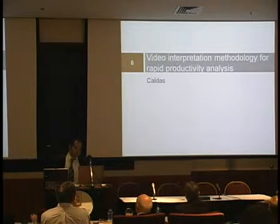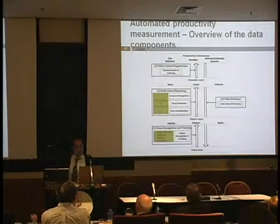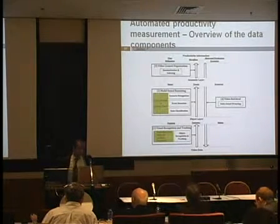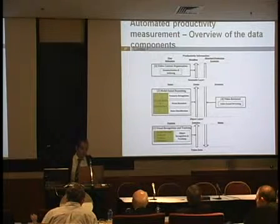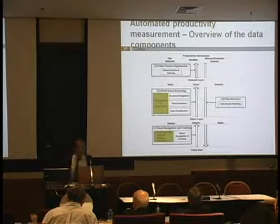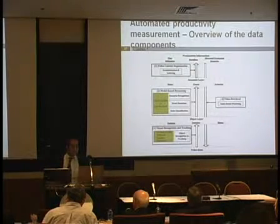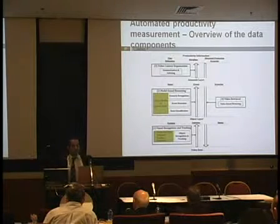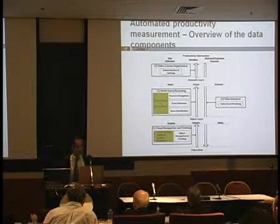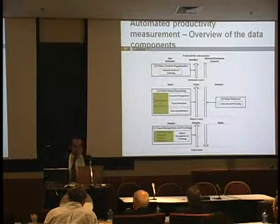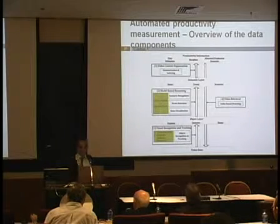Another researcher proposed and implemented a video interpretation methodology for rapid productivity analysis. The model has four layers. In the lower level, we have the video data, which is transferred to the object layer — position, trajectory, and motion. That is then transferred to the semantic level using model-based reasoning, where states, events, and scenarios are extracted. These are then transferred to productivity information: time utilization, workflow, and abnormal production scenarios.